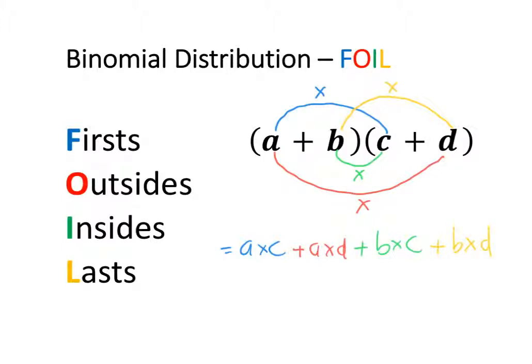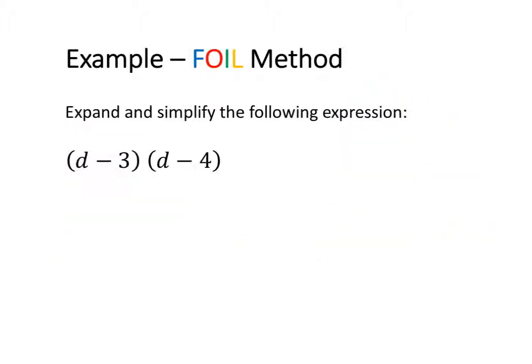And once we've done that first step and used our FOIL method, we can then go through and simplify by completing the multiplications and then collecting any like terms. So let's have a look at an example. In this example, we want to expand and simplify (d minus 3) and (d minus 4).